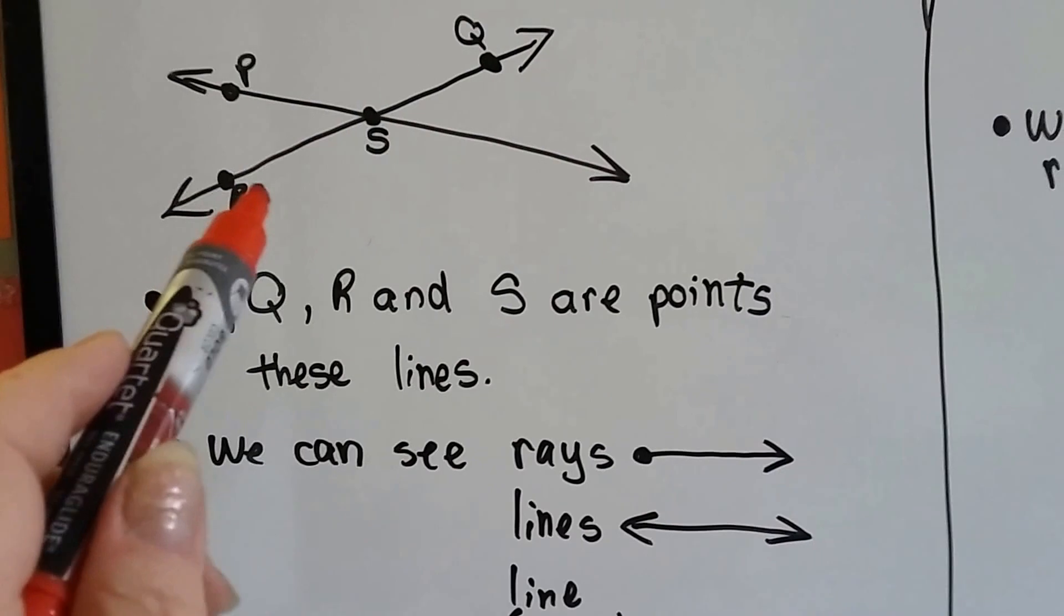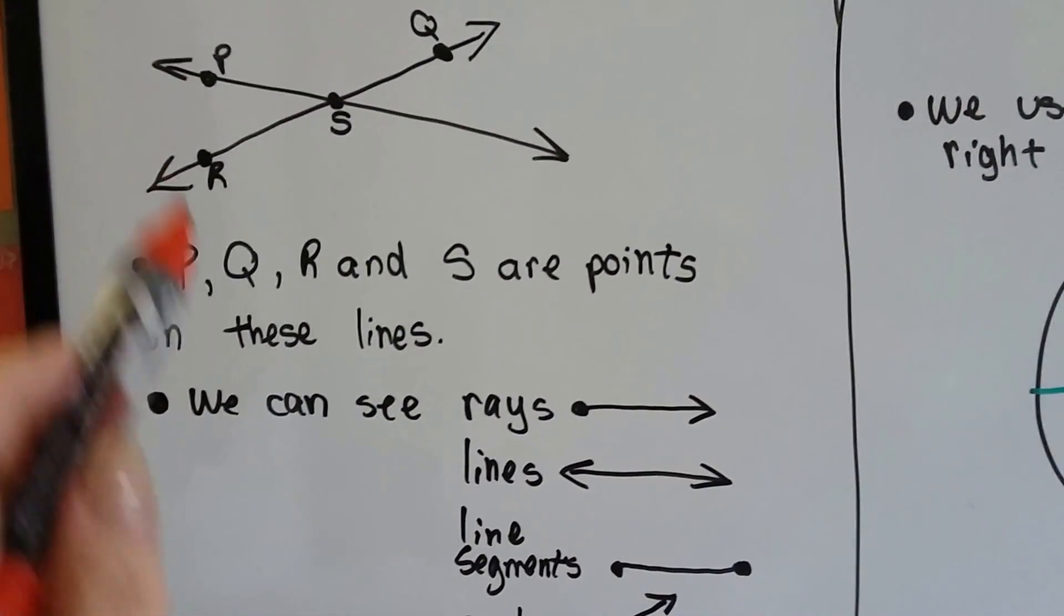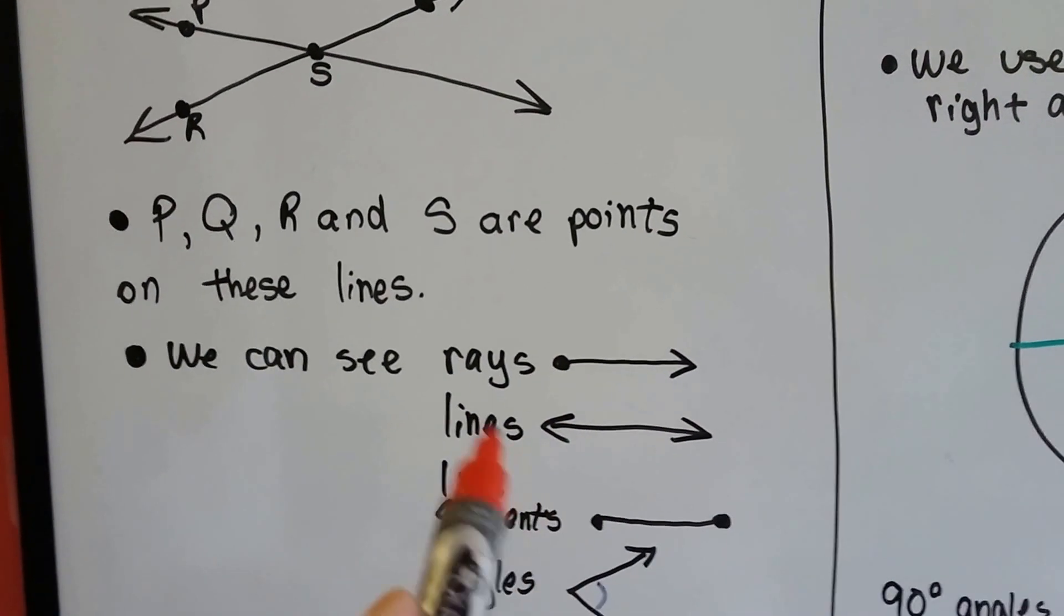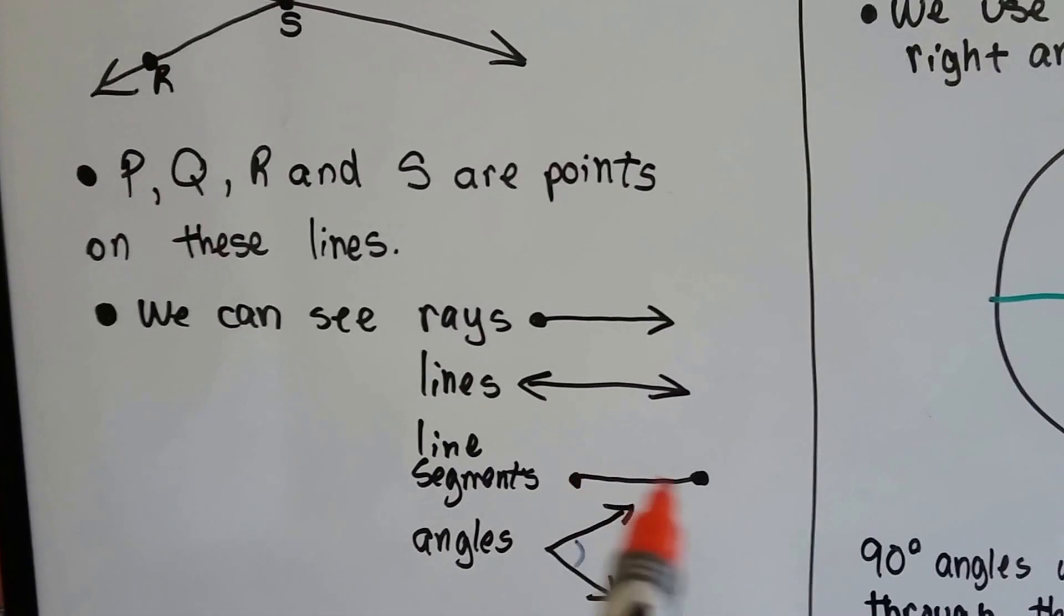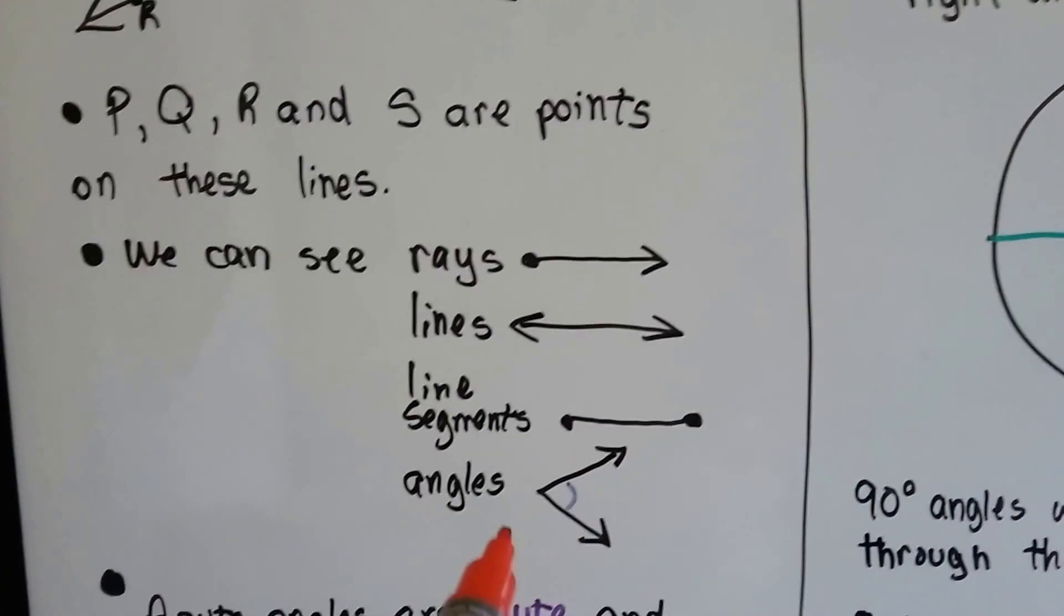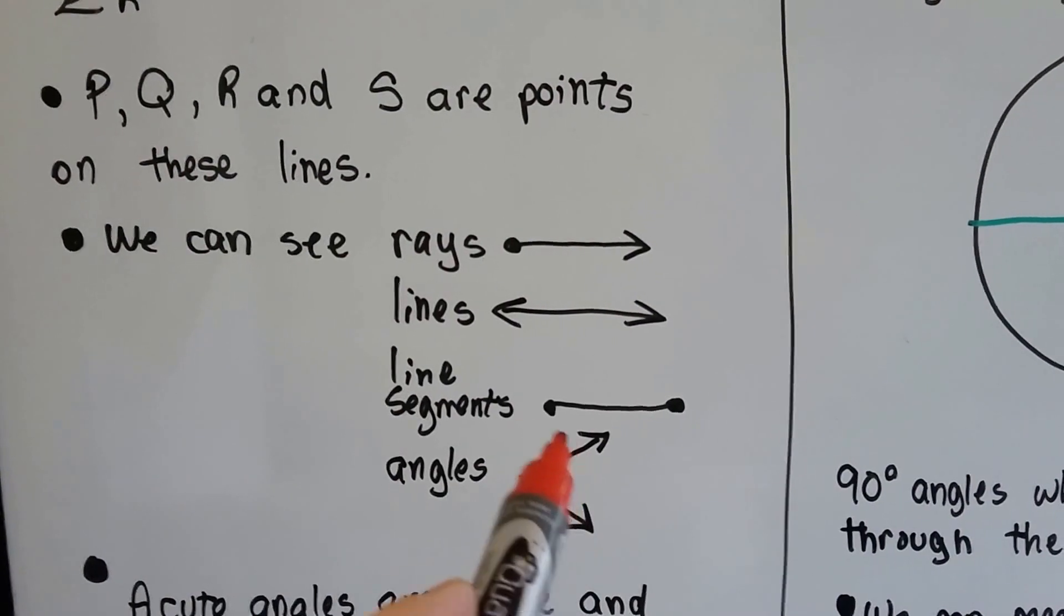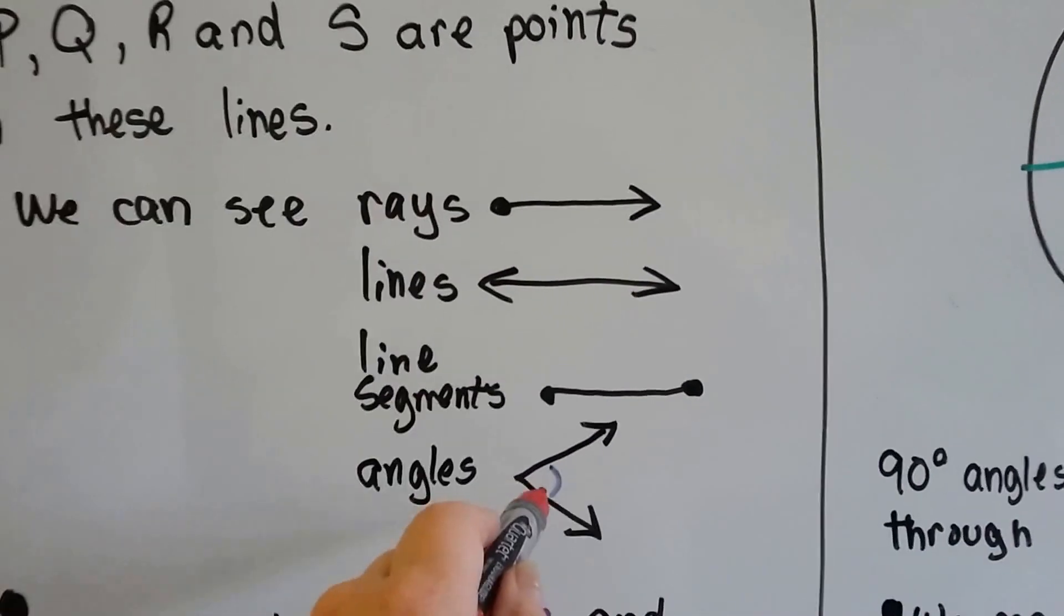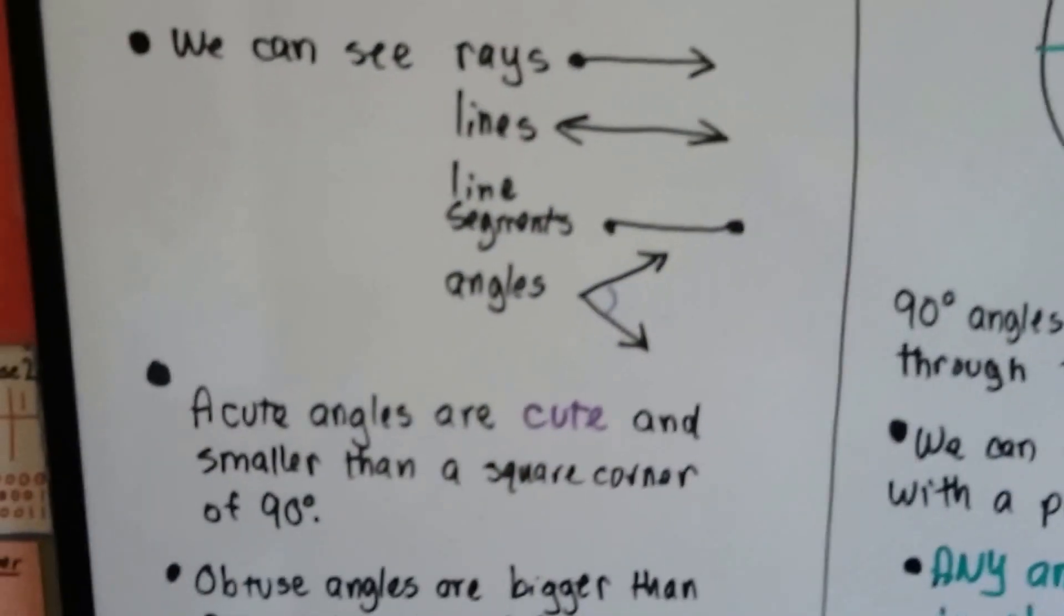You remember what a ray is? A ray is a point with an arrow at the end, like this. Lines have two arrows, and line segments have two points at the end, and angles are measured on the inside here, okay, or on the outside. You can either measure it on the inside here, or on the outside if it's so open that it's wrapped all the way around.